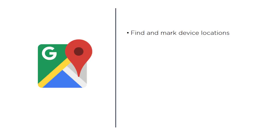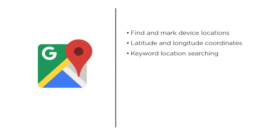In this course, you'll learn how to build an Android application that can find and mark your device's location on a Google map, determine latitude and longitude coordinates of locations, and search for locations using keywords like city names, street names, business names, and postal codes.